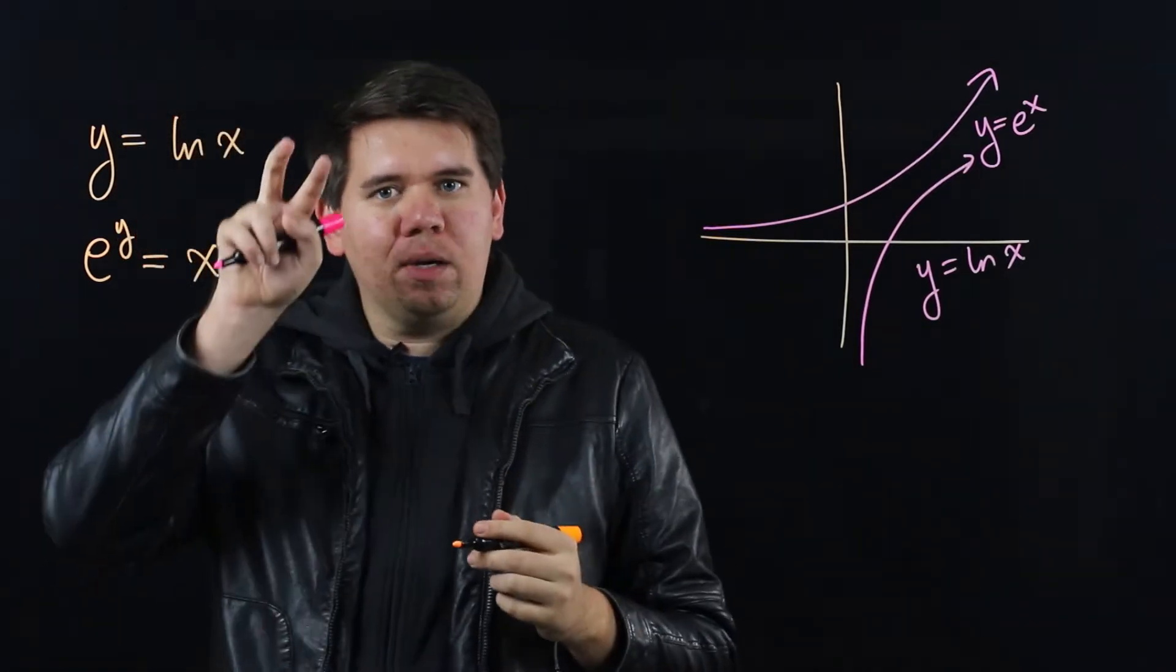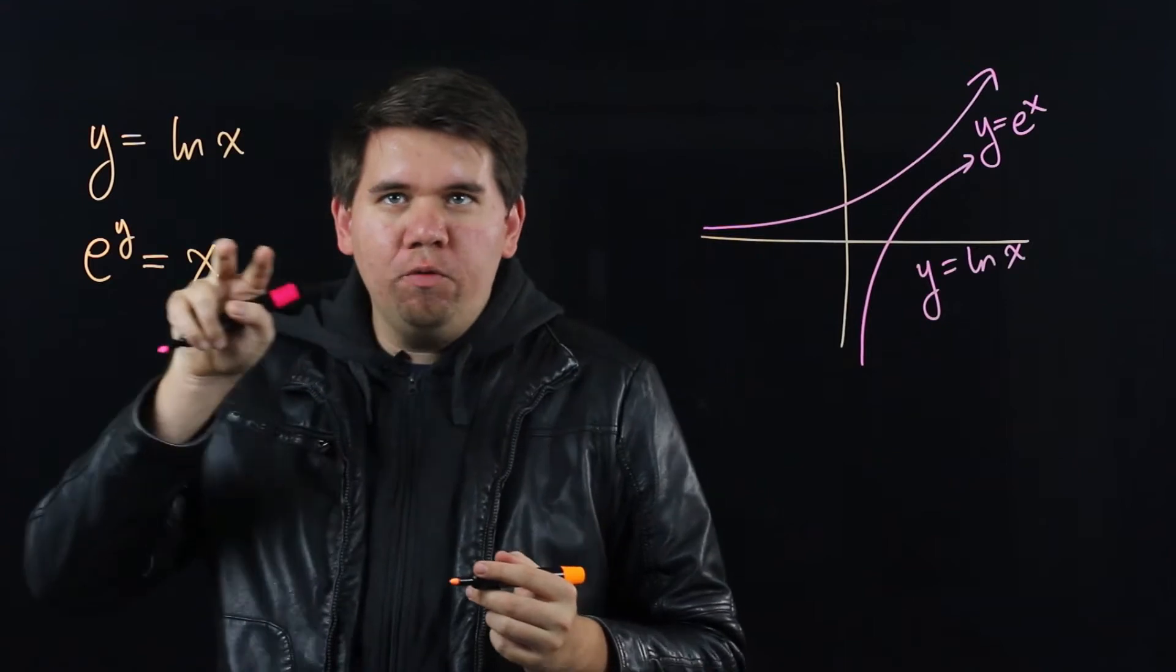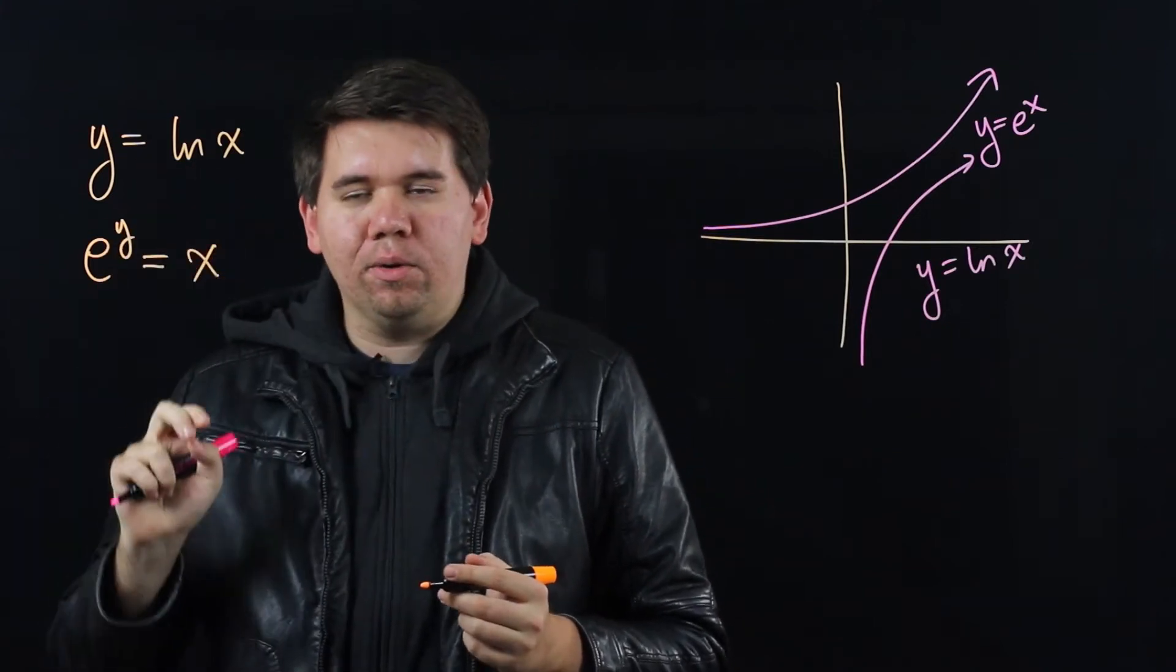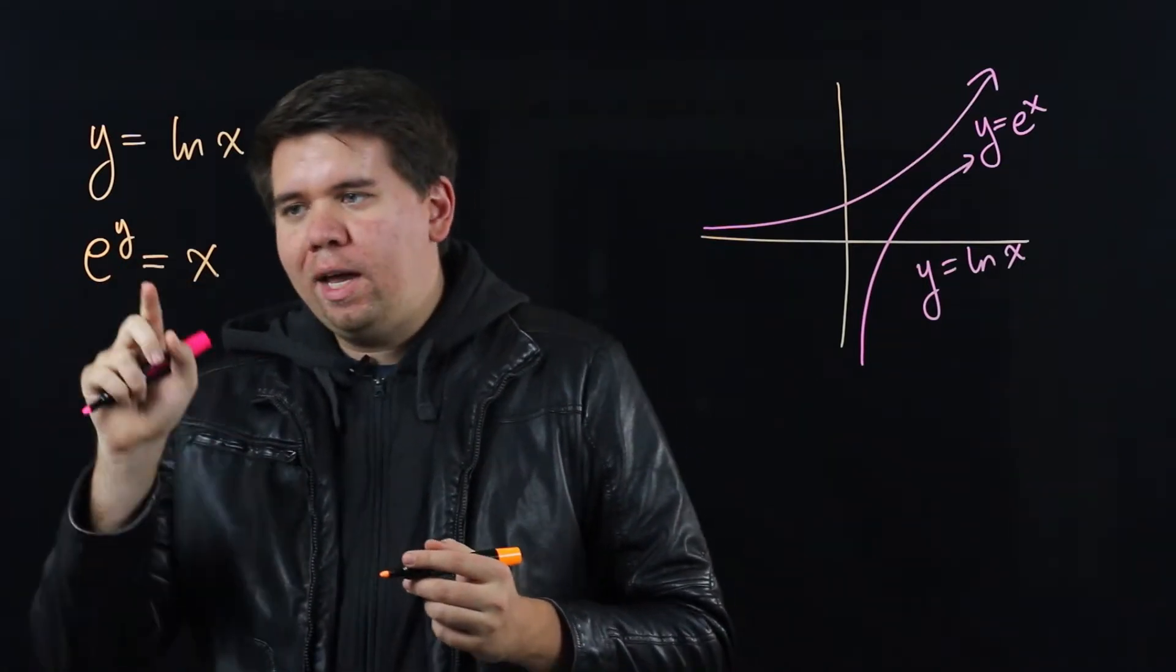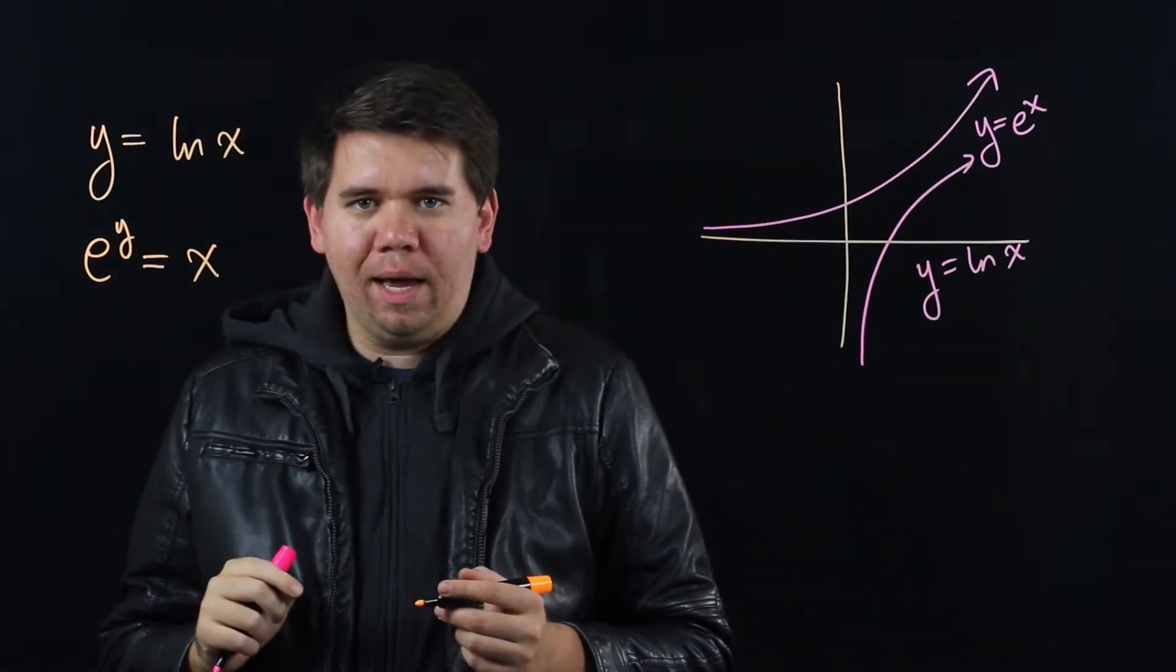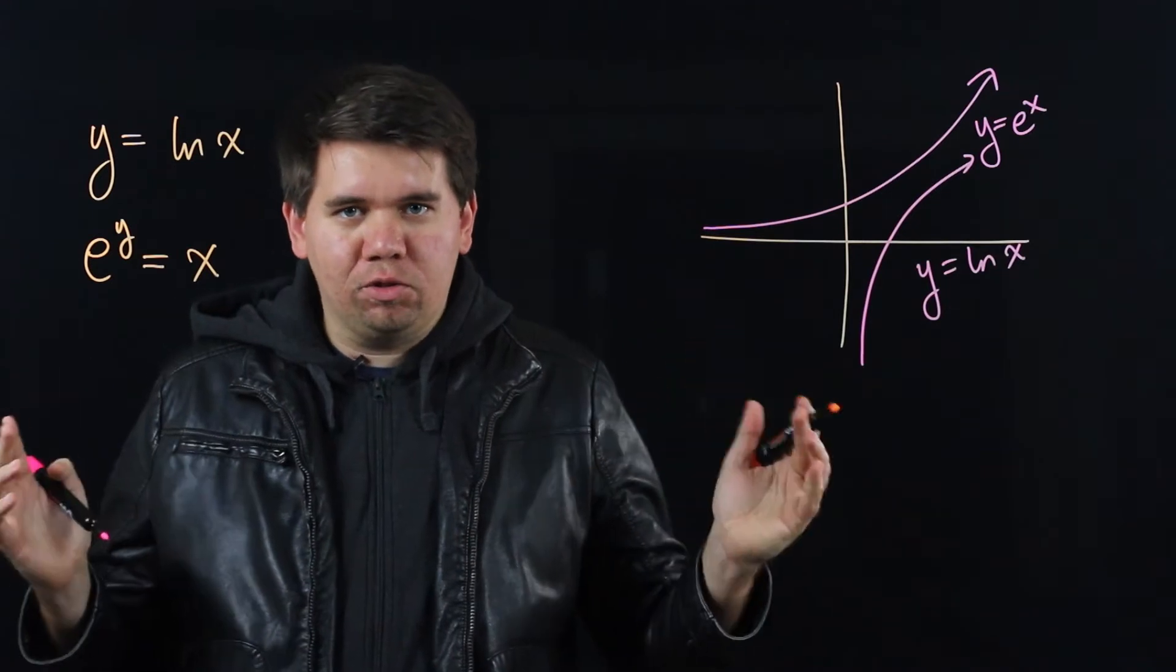Think, just like if there had been a plus two on one side and you move it over as its inverse, minus two, you can move natural log over as its inverse, e to the... So we have e to the y is equal to x. Now we can calculate the derivative.